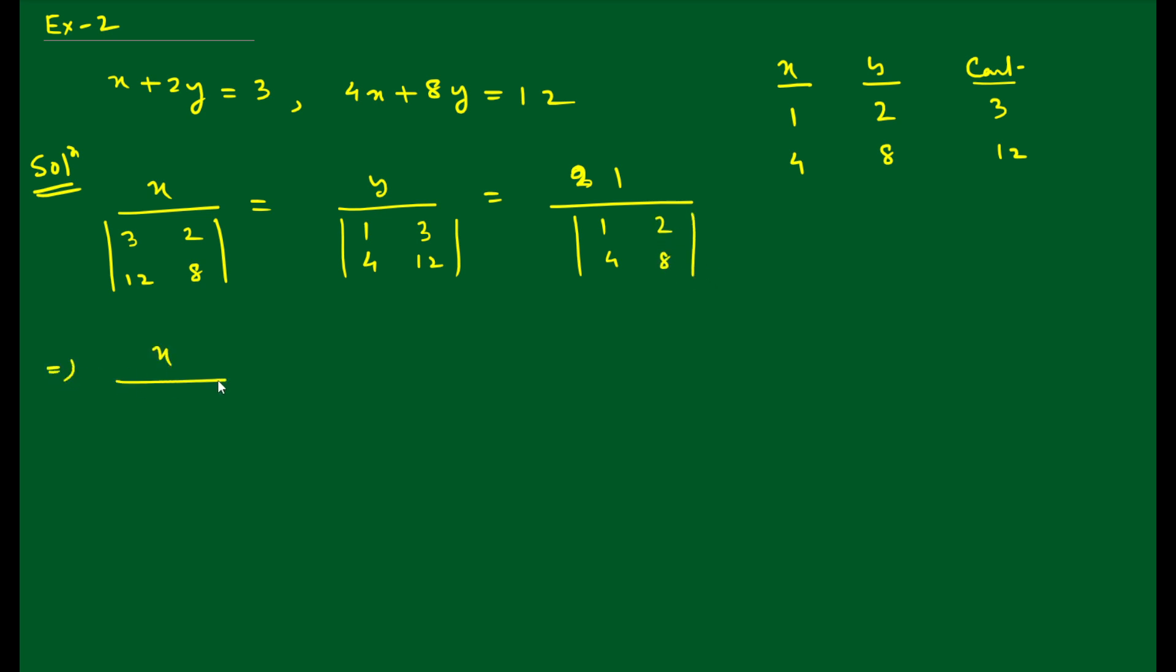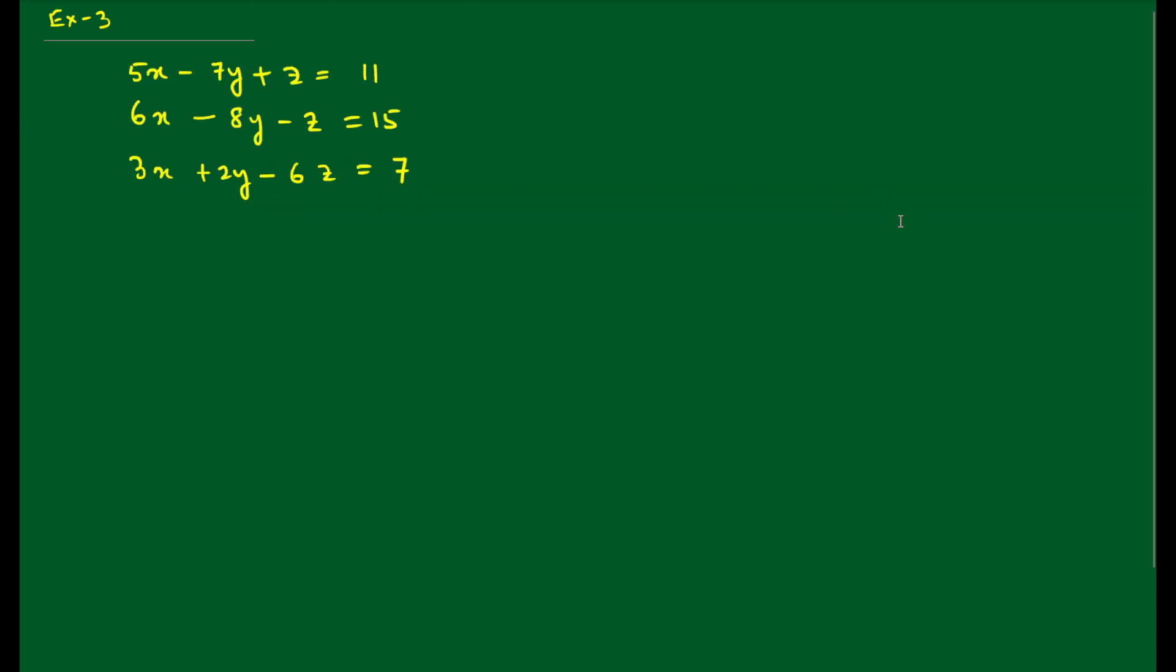So x divided by 24 minus 24 equals 0. Y divided by 12 minus 12 equals 0. And 8 minus 8 equals 0. This particular equation is inconsistent. 0 by 0 is undefined. When we find x, 0 divided by 0 is undefined. Therefore, the system is inconsistent. If you solve this using matrix method and the determinant of A is 0, then A inverse does not exist, meaning the system is inconsistent.